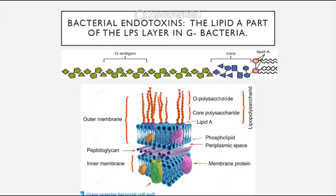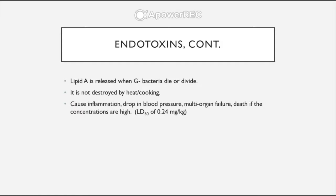This slide conveys the lipid A part of the LPS layer in gram-negative bacteria. With gram-negative bacteria, you have an inner membrane, a peptidoglycan layer in the periplasm, and an outer membrane. Attached to this outer membrane is the lipopolysaccharide, and there is a component called lipid A that is part of this lipopolysaccharide. Lipid A can cause an inflammatory response in humans and is therefore an endotoxin. It is released both when gram-negative bacteria die and as they divide.